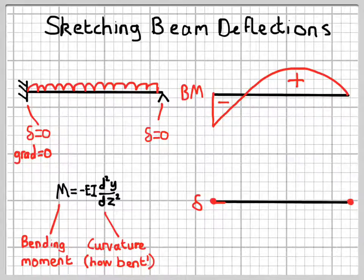The right-hand side, we've got a positive bending moment, so that's where the beam is sagging. And on the left-hand side, we've got a hogging part, where the beam is hogging.